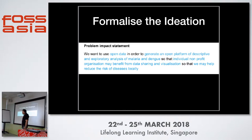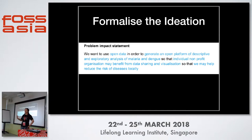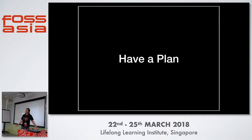So how do we do that? First, we need to formalize the idea — make sure we know what the problem is and what we're going to do about it. Our impact statement: we want to use open data in order to generate an open platform of descriptive and exploratory analysis of malaria and dengue. Individual nonprofits and organizations will benefit from it. We will help reduce the risk of diseases locally, because if we don't put it in a central place, we won't be able to see the movements of these diseases in the region — it's just bounded by your particular country or even your particular state.